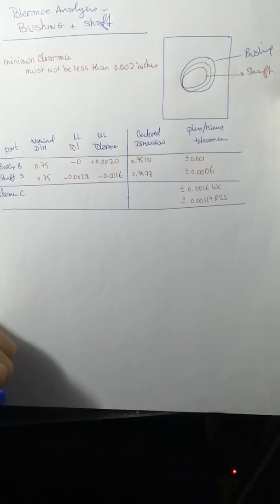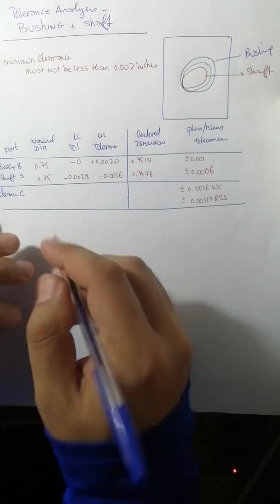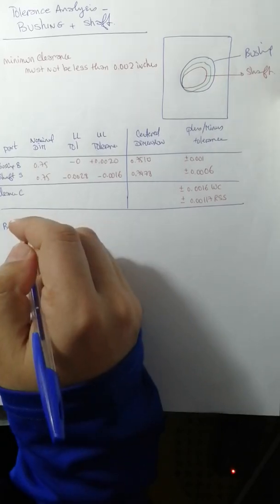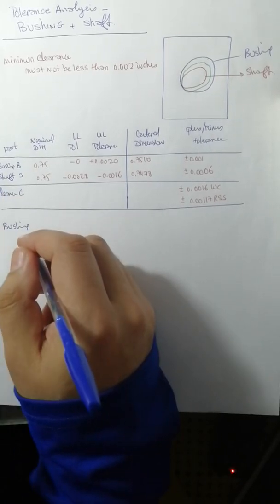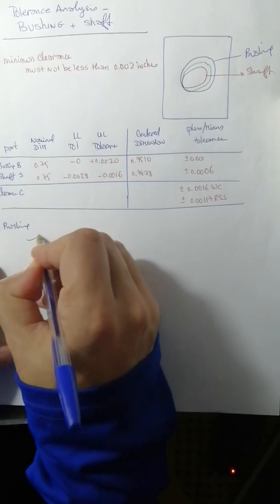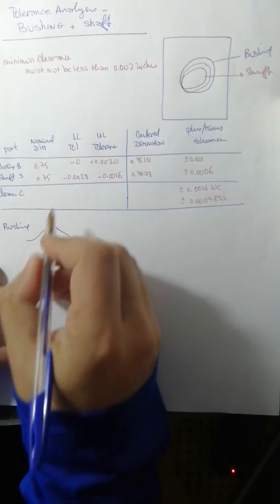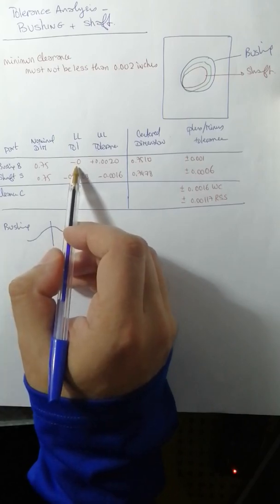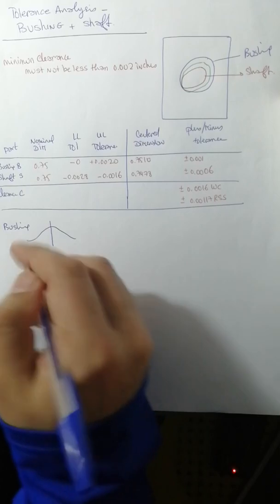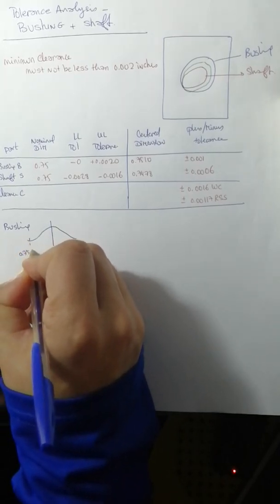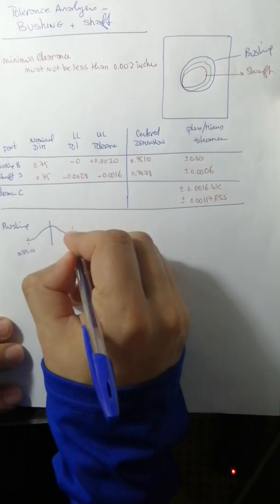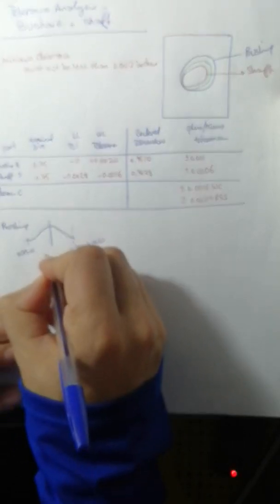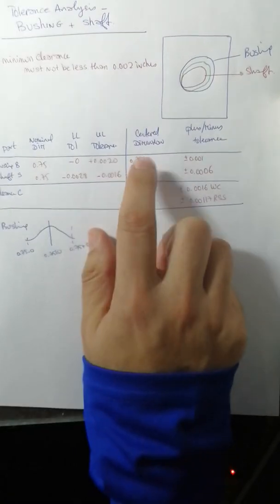Those are the dimensions written on the box but they are not accurate. We have the bushing and we know for sure if you consider all the measurements of the bushings, they must have a normal distribution. So the value in the middle is 0.75, the value on the left is 0.75 minus 0, and the value on the right is 0.75 plus 0.0020. So definitely the one in the middle is 0.7510.